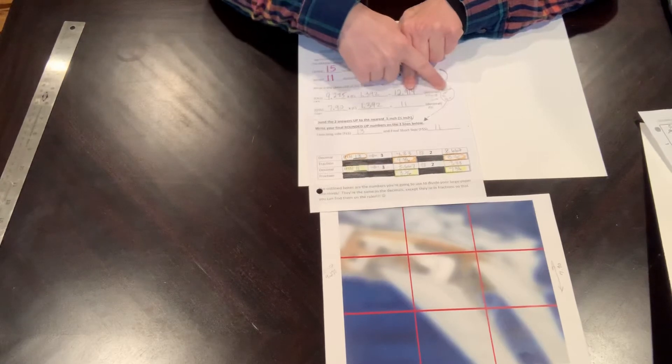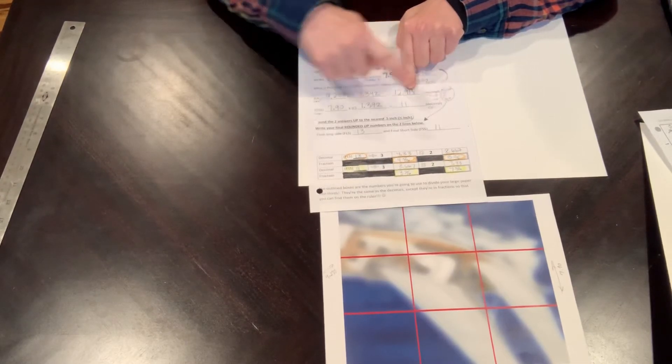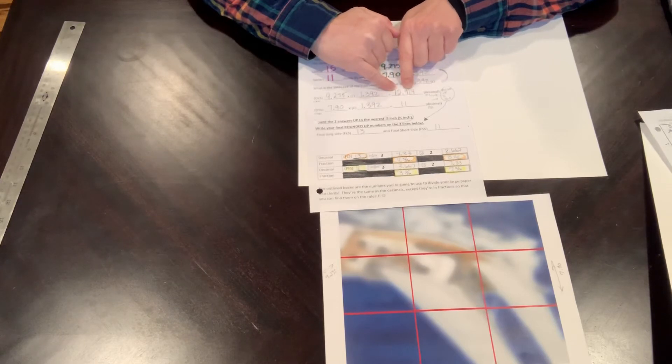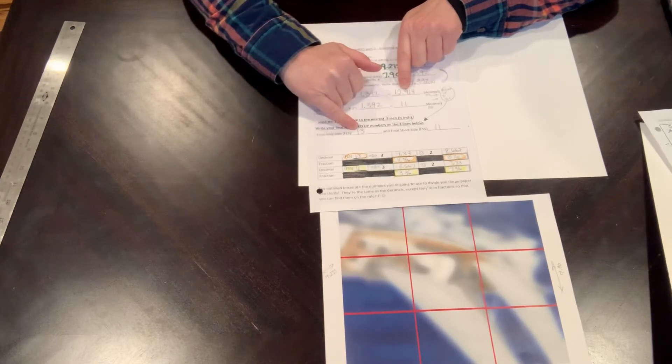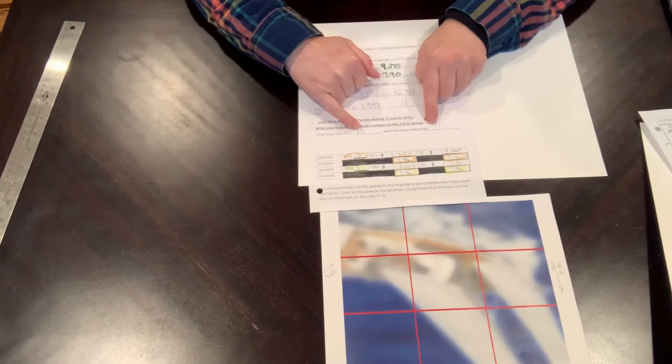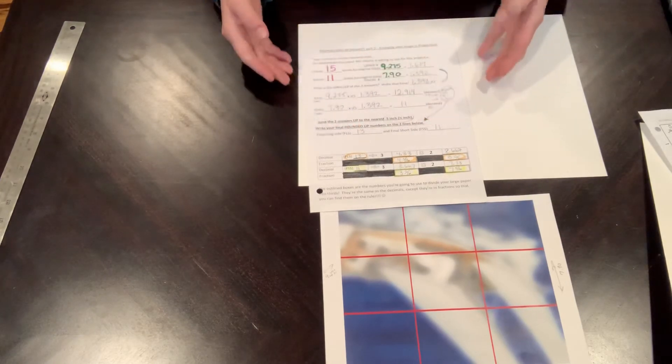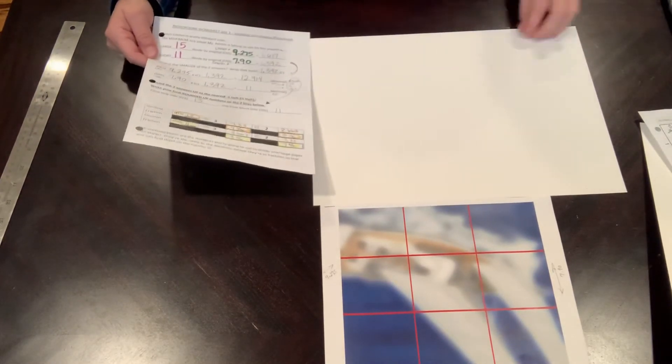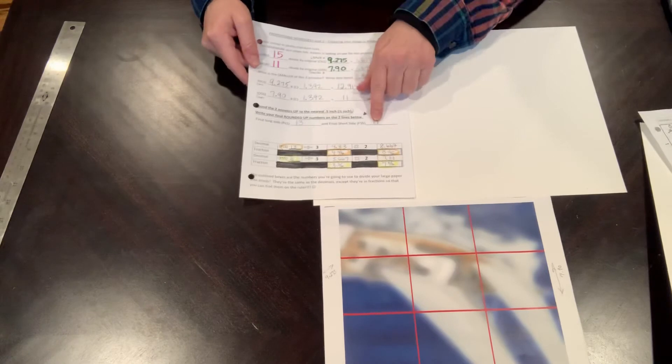It says round up to the nearest half inch. If I have 12.914 as my answer, the next half inch is 13. So I have my final long side for my paper at 13 inches and my final short side at 11 inches. I'm working with 15 by 11, so I know I have my 11 inches here, but I needed to trim off two inches.